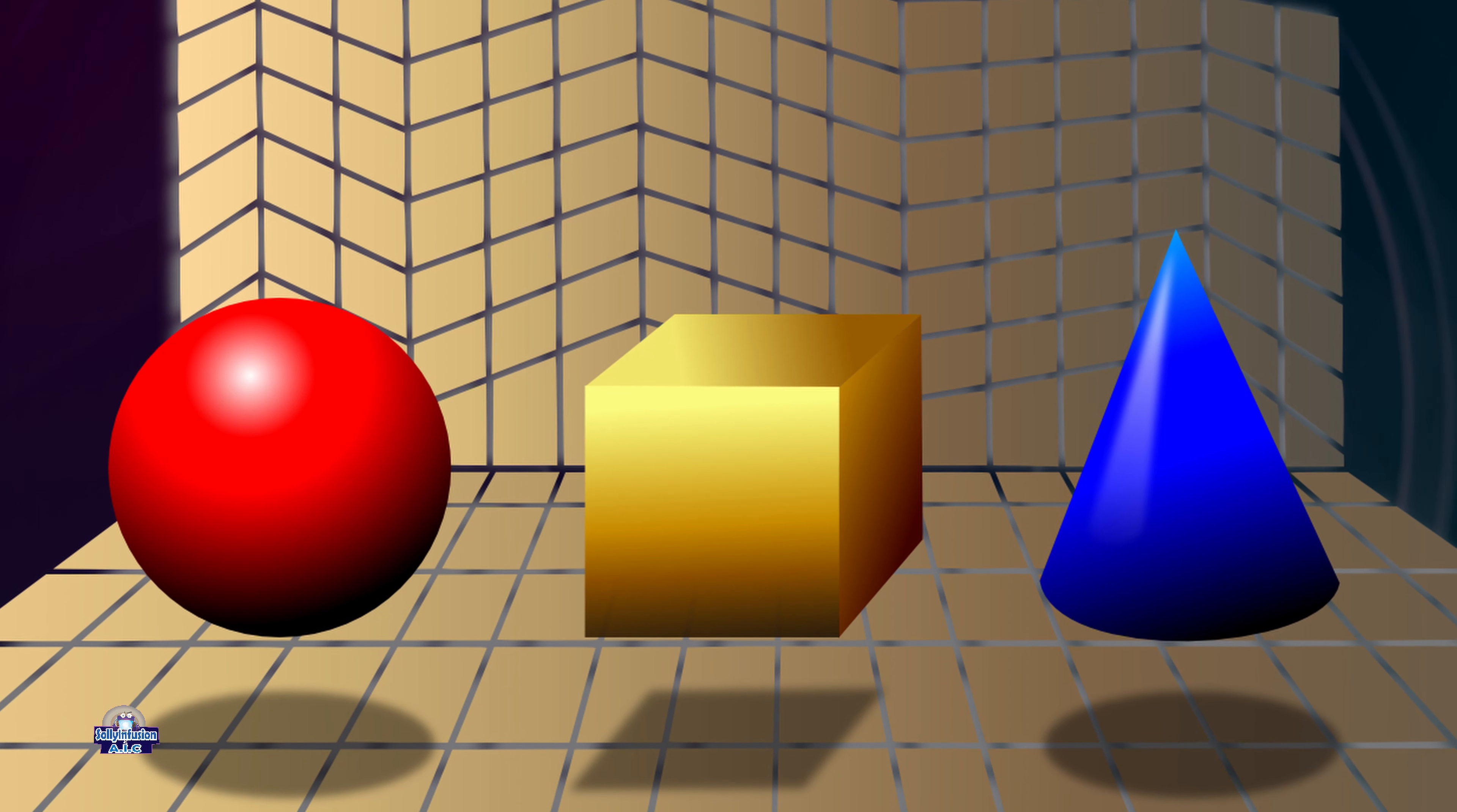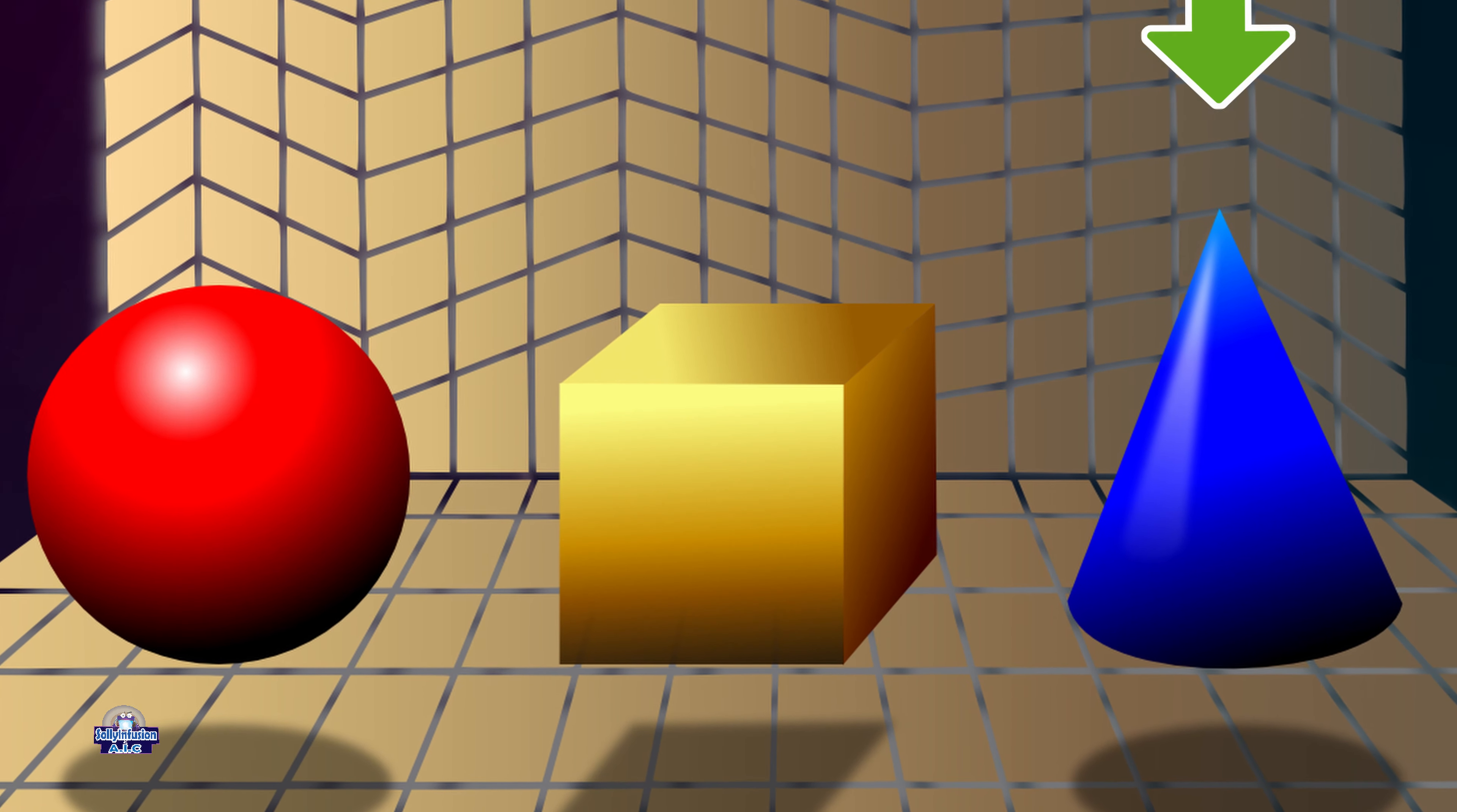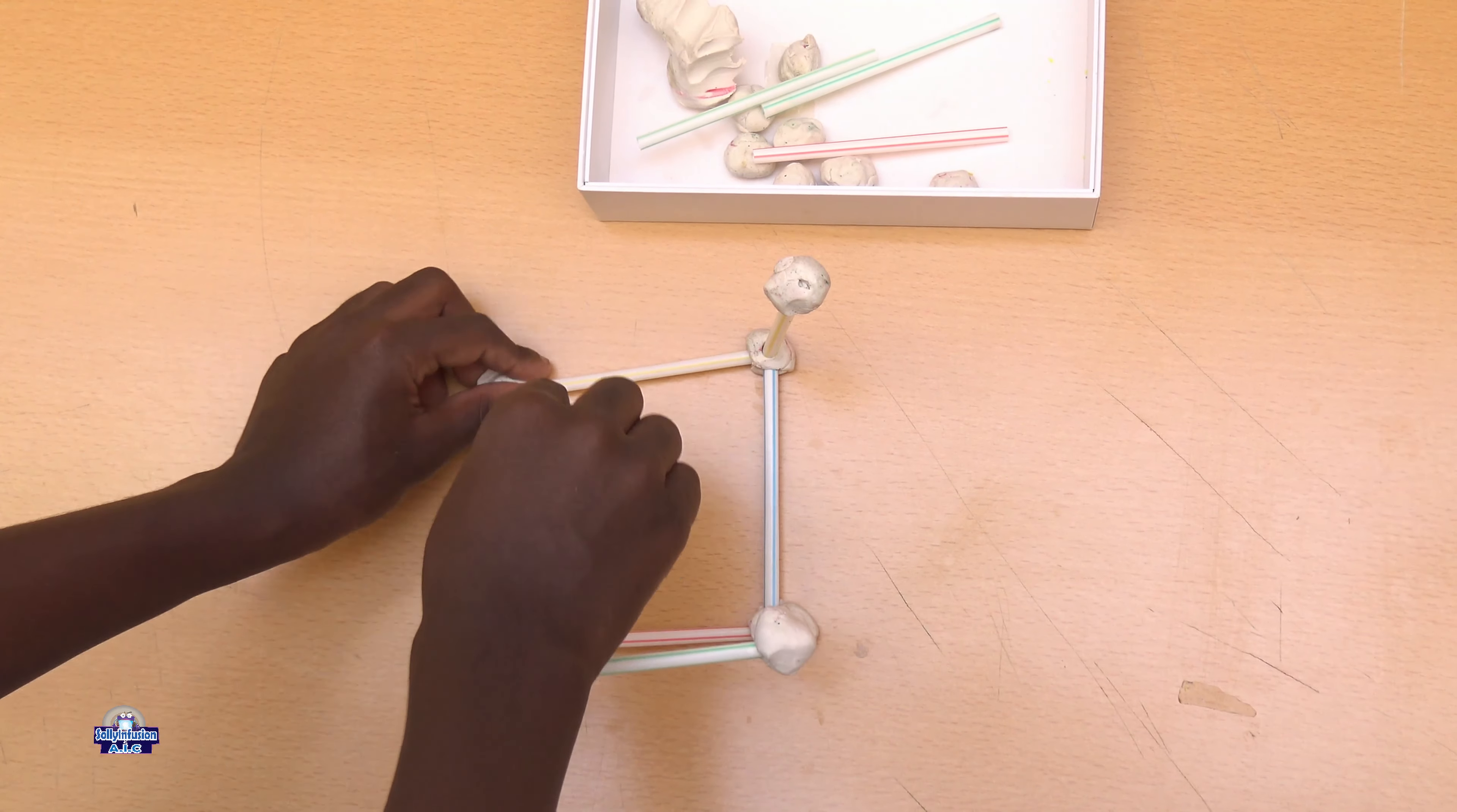Now look around again. Can you find anything that looks like a cube? Which one is a cube? Is it this, this, this, or this? Which one? Yes, this one.